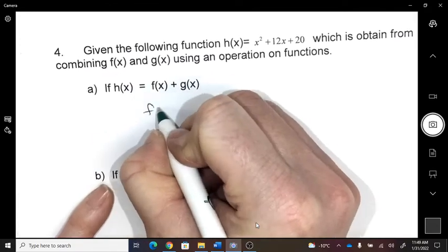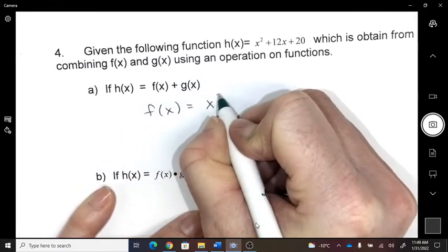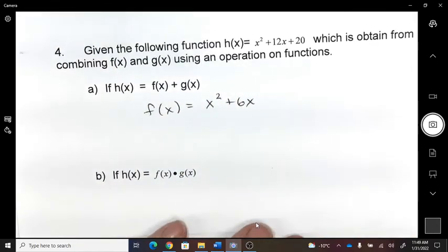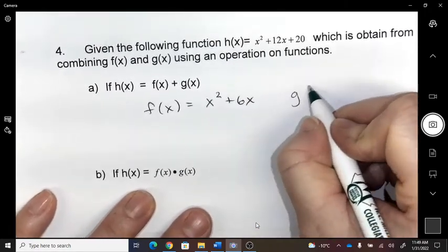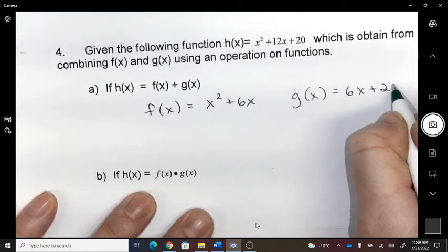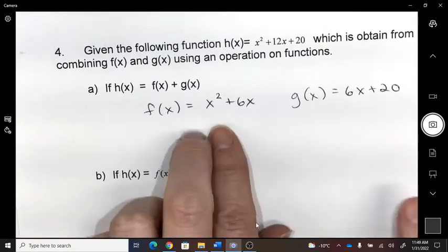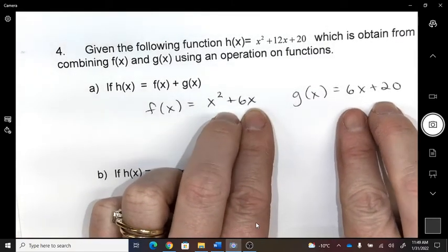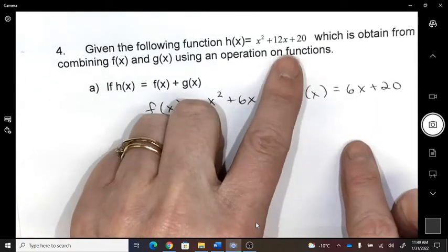So we could say f of x could be x squared plus 6x. And g of x could be 6x plus 20. Doesn't matter whatever I do, but as long as I make sure when I add those together, they make that.